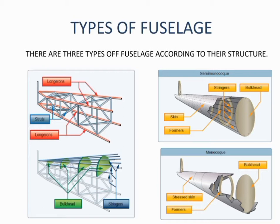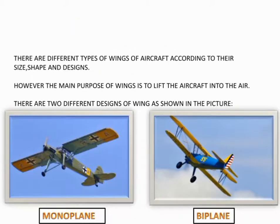The three types of fuselage according to their structure are: first, truss fuselage; second, semi-monocoque; and third, monocoque. Wings are the second main component of the aircraft.